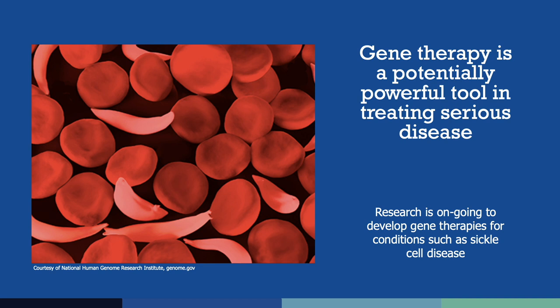Sickle cell disease can be very painful and life-limiting. Research is currently underway to see if genome editing could be used to help those with sickle cell disease. One approach involves using genome editing to tell a patient's cells to switch on a gene for an alternate form of hemoglobin that is typically switched off in adults. By switching to this other form of hemoglobin, the red blood cells will no longer sickle. These changes in the blood cells, which would not be passed on to future generations, are showing promise for patients in these early days of clinical trials.